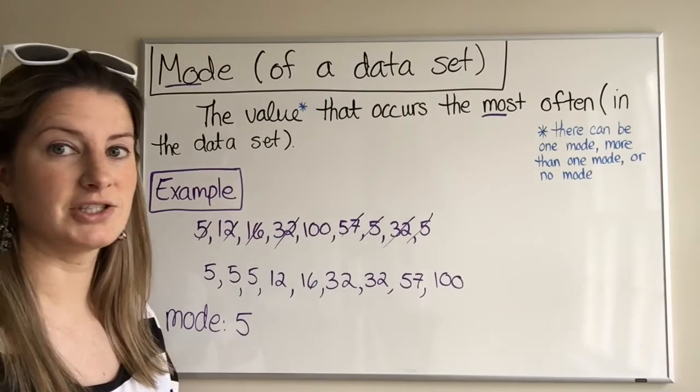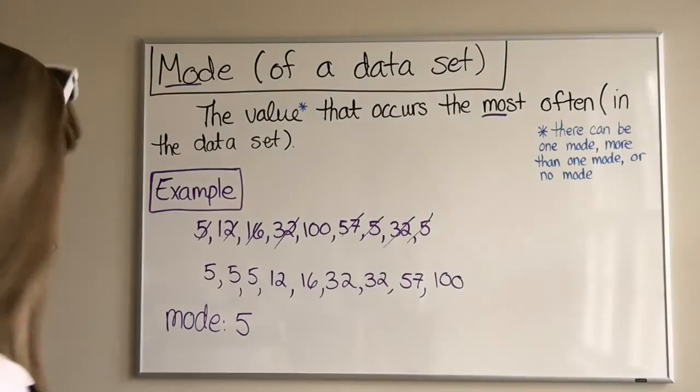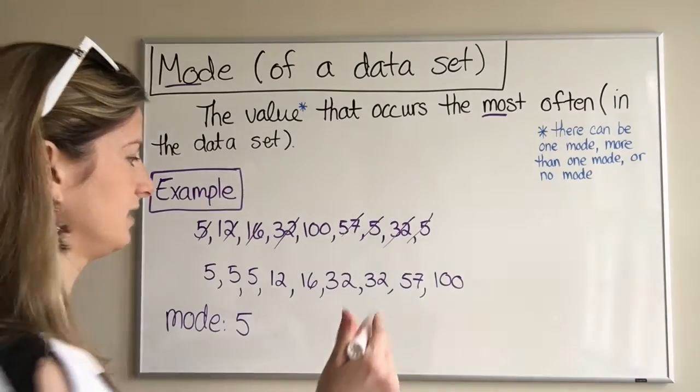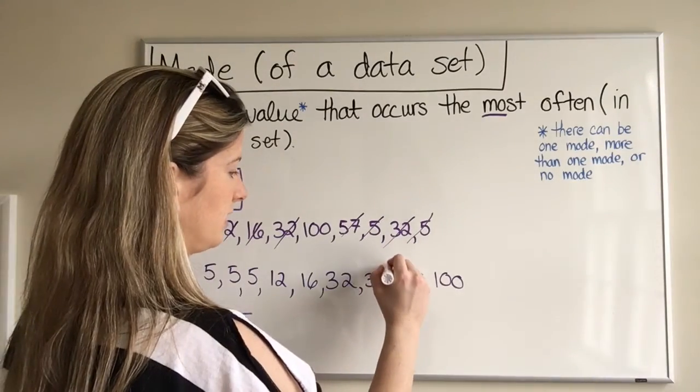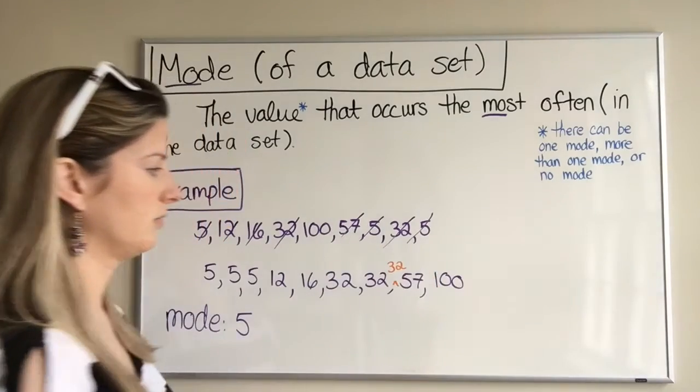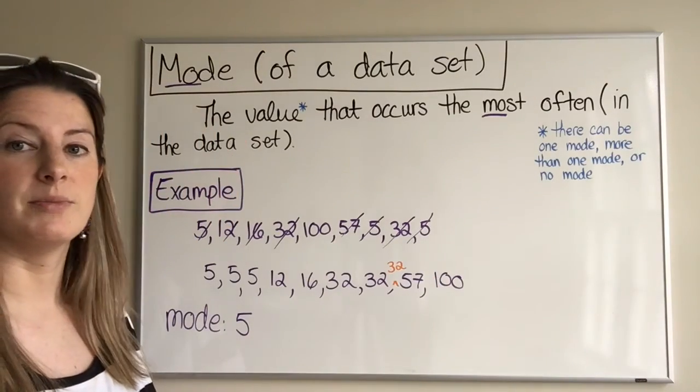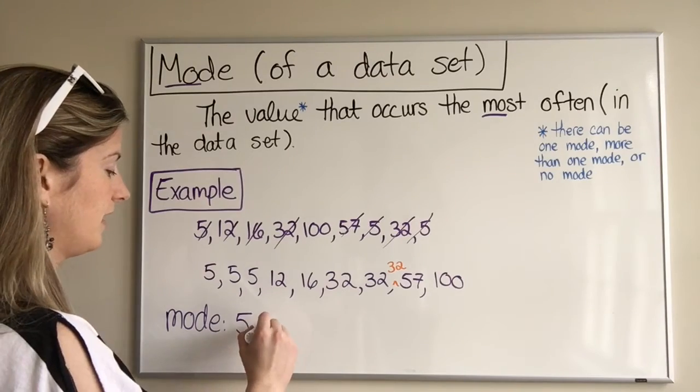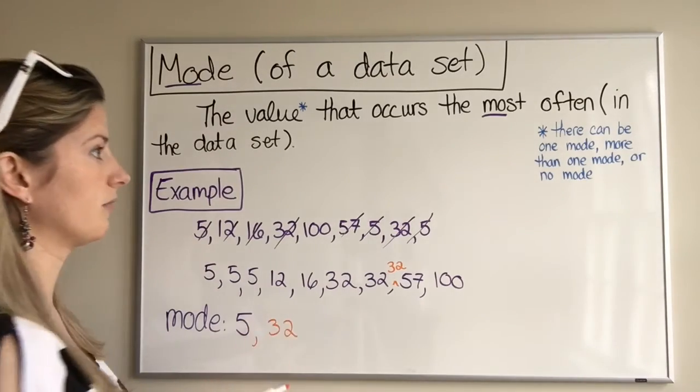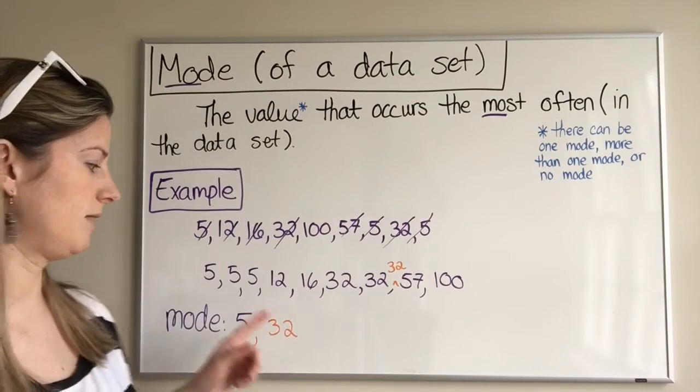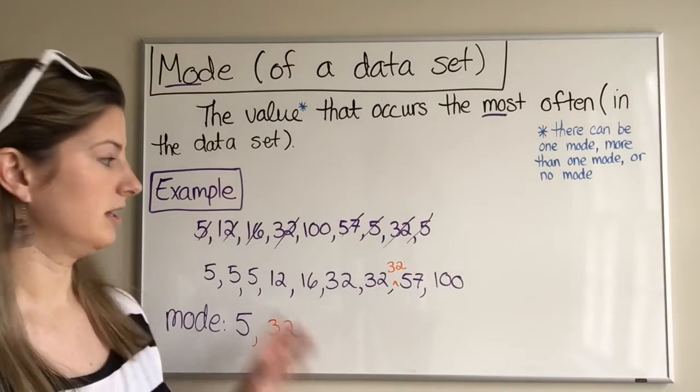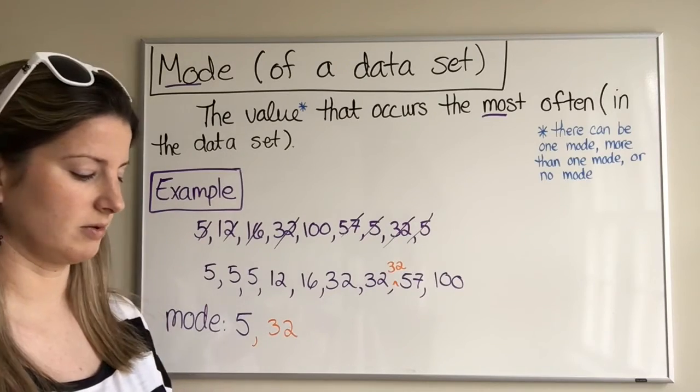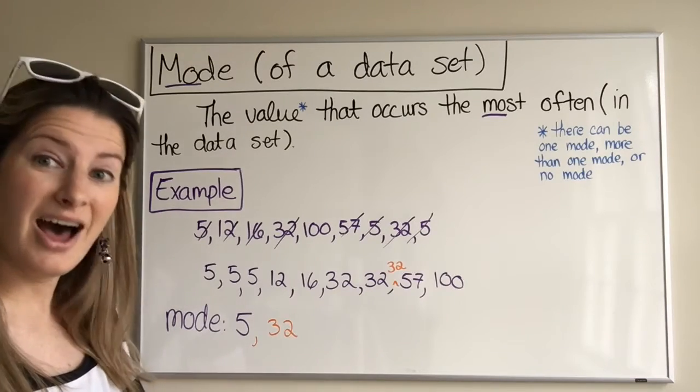Now, let me ask you a question. What if I were to add another value to this data set and that value I squeezed right in here was 32? Then what would the mode be? The mode would be 5 and 32. There would be more than one mode because we see both 5 and 32 the same amount of times - three times - and everything else we only see once.